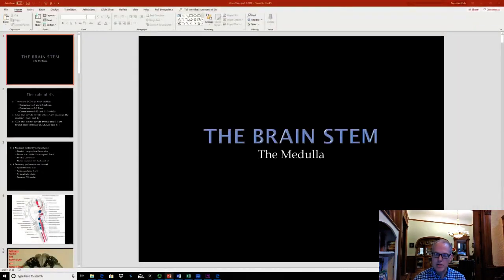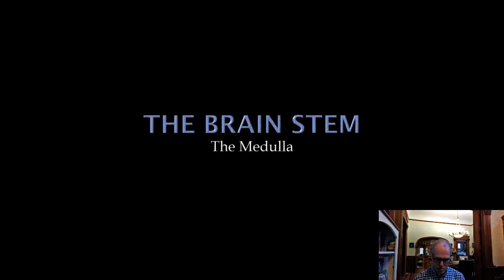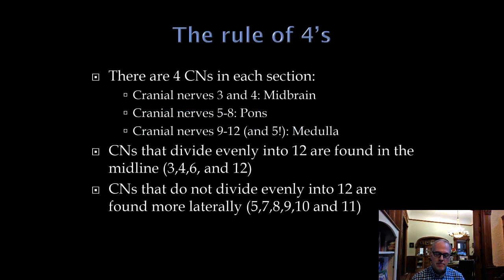Our next lecture is on the medulla. We'll be continuing up, following pathways we talked about in the spinal cord. Many review books speak of the rule of fours, and there's some value in this, but just realize these are not entirely correct — they provide some big-picture guidelines for looking at the brainstem.